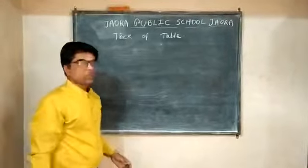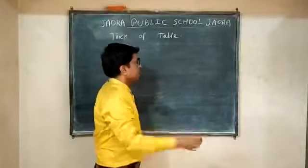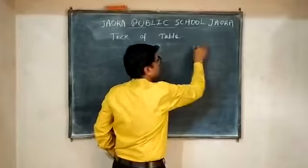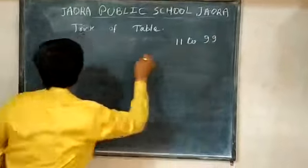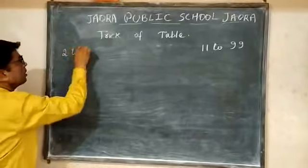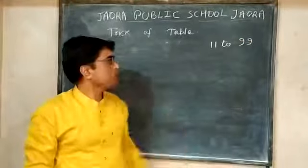So to remove that mistake I will show you one trick of making the table today. By that trick you can make the table from 11 to 99. If you know the table from 2 to 9, then you can range the table from 11 to 99 very easy going.